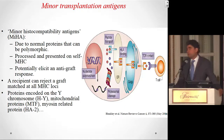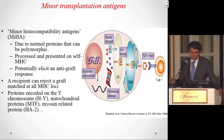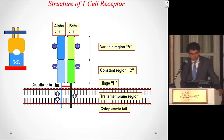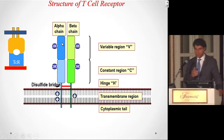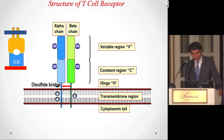Minor histocompatibility antigens can differ by only one or two amino acids without affecting protein function, but when carried with the kidney, the recipient's immune system recognizes them as foreign antigens and attacks. There is therefore a risk of rejection even with a two-haplotype match from a sibling, which is why we still give maintenance immunosuppression. Whether to give induction therapy is debatable — most centers do not give it for these patients.